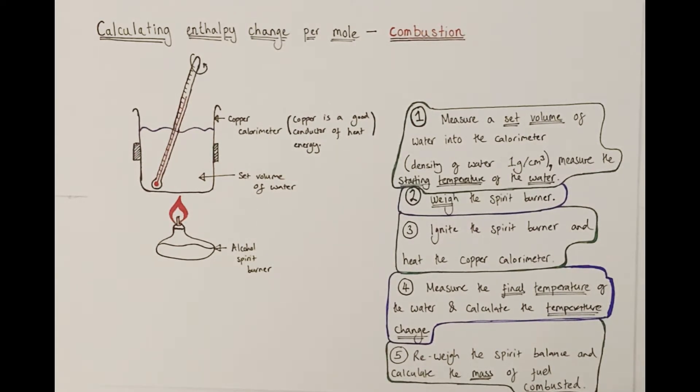We utilize something called a copper calorimeter. Copper is used because it's a very good conductor of heat energy. A copper calorimeter is just a copper can suspended using a clamp. Below the can we burn an alcohol fuel in a spirit burner. The wick draws the fuel up via the capillary process and then we ignite the fuel and allow the burning fuel to transfer heat energy to the can and specifically to water placed inside the can.